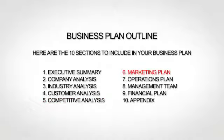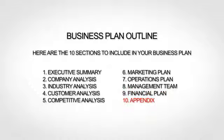The sixth section is your marketing plan, where you lay out your marketing strategy. The seventh section is your operations plan, where you explain how you actually run or will run your business. The next section, the management team, is where you provide bios of your team. The ninth section is your financial plan, where you give financial forecasts. And finally, the tenth and last section is your appendix, where you provide any additional supporting information.